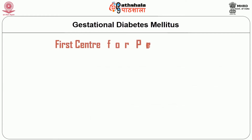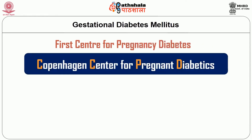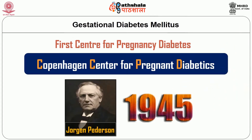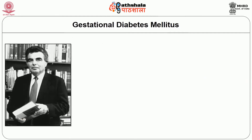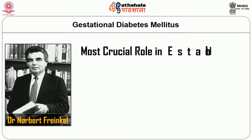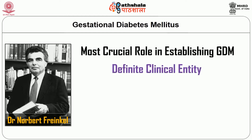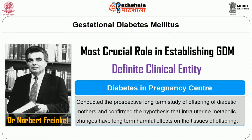The first center for pregnancy diabetes, the Copenhagen Center for Pregnant Diabetics, was established by Jorgen Pedersen in 1945. Dr. Norbert Frenkel played the most crucial role in establishing GDM as a definite clinical entity. His center, the Diabetes and Pregnancy Center, conducted a prospective long-term study of offspring of diabetic mothers and confirmed the hypothesis that intrauterine metabolic changes have long-term harmful effects on the tissues of offspring.